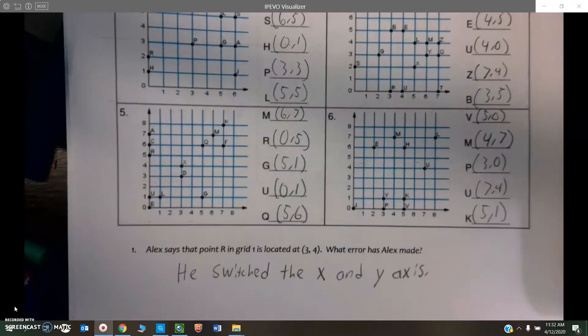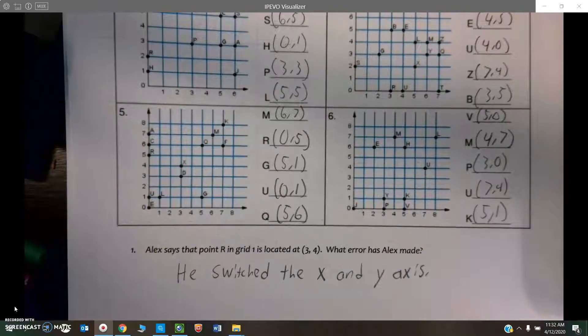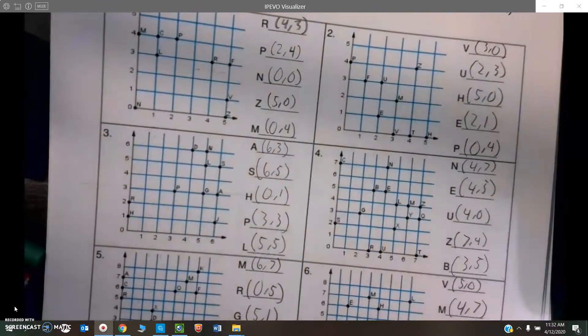And so once again, this one, what mistake did he make for R? He switched the x and y axis. He said (3, 4), so it should have been 4 over.